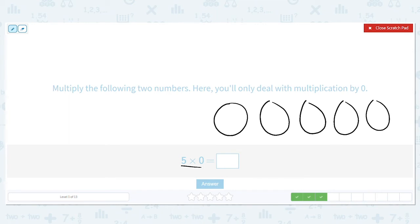How about five times zero? That's saying I have five groups and how many items are in each group?